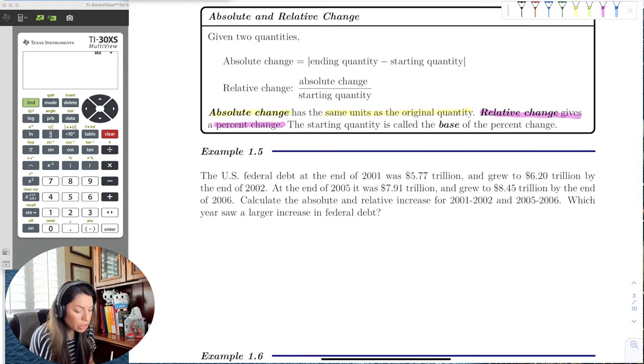So, and again, the starting quantity is going to be, let me do that in green, this base quantity or starting quantity will be that first initial amount at the beginning of the year. So in 2001, that would be $5.77, and in 2005, it's $7.91.